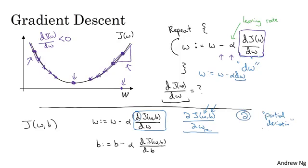But don't worry about this. If J is a function of only one variable, then you use lowercase d. So the only difference between whether you use this funny partial derivative symbol or lowercase d as we did on top is whether J is a function of two or more variables, in which case you use this symbol, the partial derivative symbol, or if J is only a function of one variable, then you use lowercase d. This is one of those funny rules of notation in calculus that I think just make things more complicated than they need to be. But if you see this partial derivative symbol, all it means is you're measuring the slope of the function with respect to one of the variables. And similarly, to adhere to the formally correct mathematical notation in calculus, because here J has two inputs, not just one, this thing at the bottom should be written with this partial derivative symbol. But it really means almost the same thing as lowercase d.